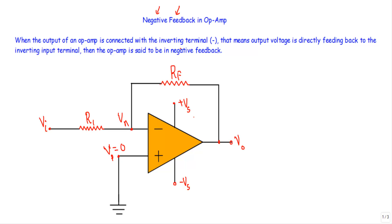When is an operational amplifier circuit in negative feedback? When the output of an operational amplifier is connected with the inverting terminal — that means output voltage is directly fed back to the inverting input terminal — then the op-amp is said to be in negative feedback.